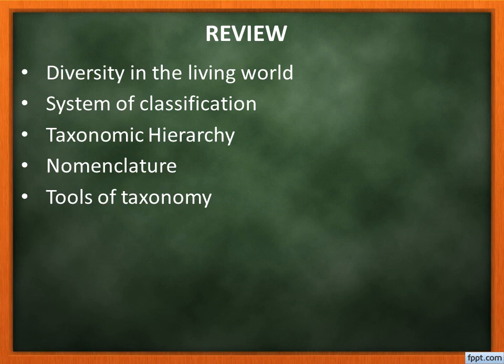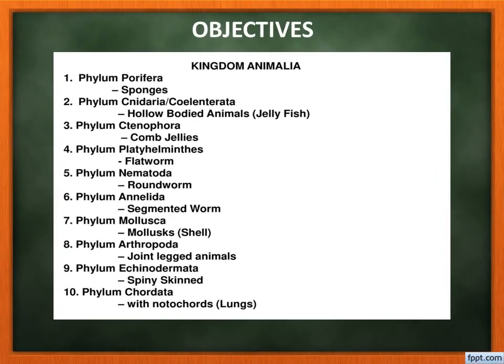In Chapter 2, we are going to discuss the five kingdom classification system. We said the entire organism is classified as five kingdoms: Monera, Protista, Fungi, Plantae, and Animalia. In Chapter 2, we are going to do a clear illustration of the last kingdom — that is Animalia. So this chapter is about Kingdom Animalia.